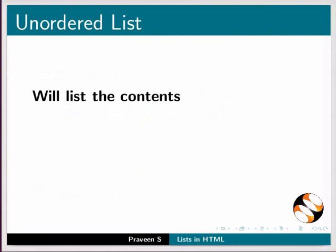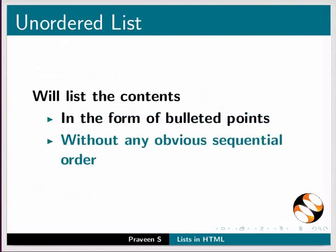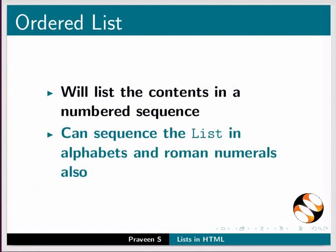Unordered list will list the contents in the form of bulleted points without any obvious sequential order. Whereas ordered list will list the contents in a numbered sequence, and can also sequence the list in alphabets and Roman numerals.